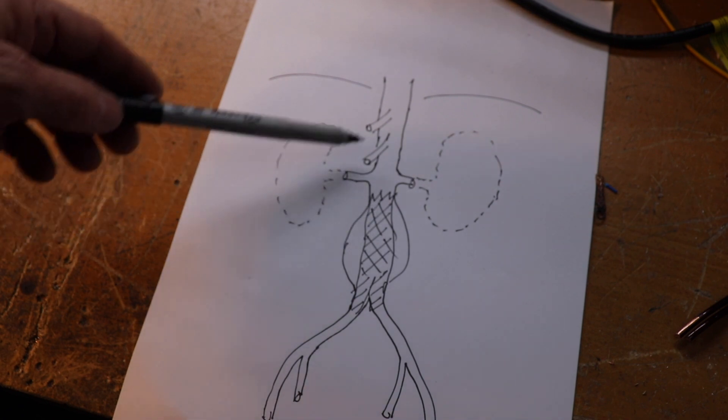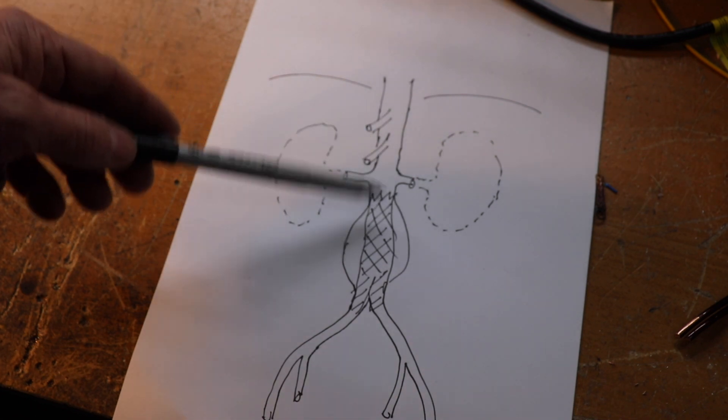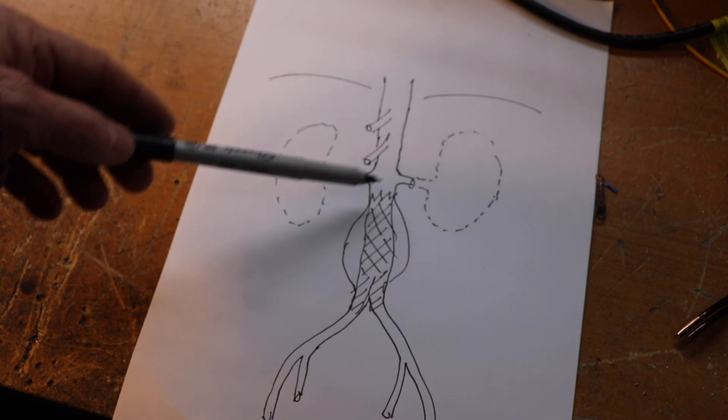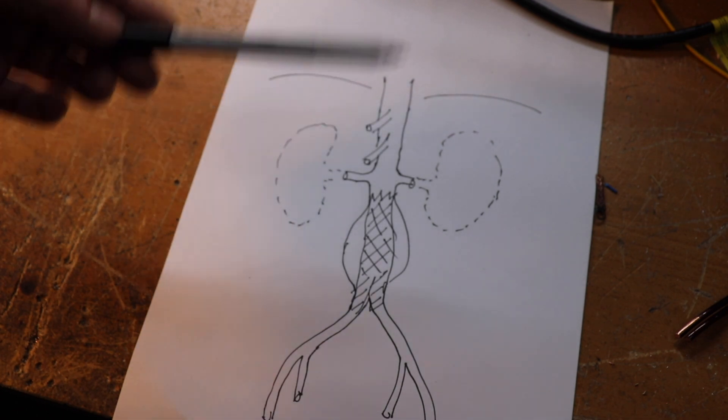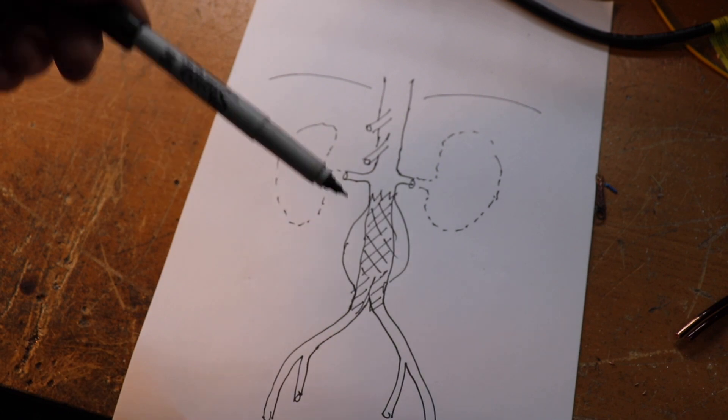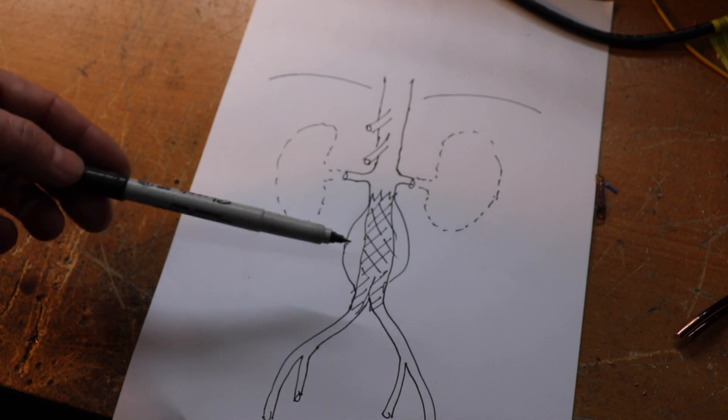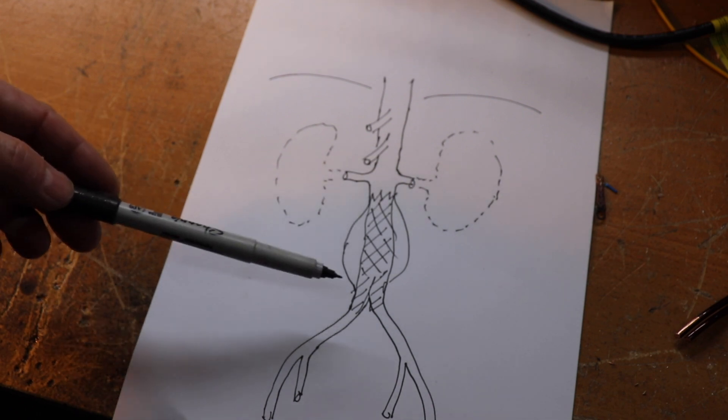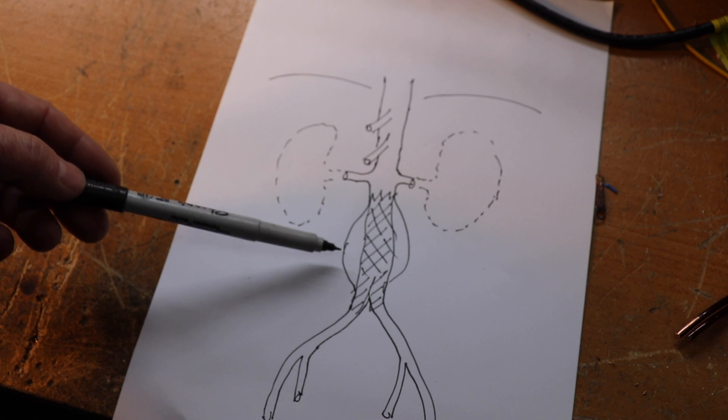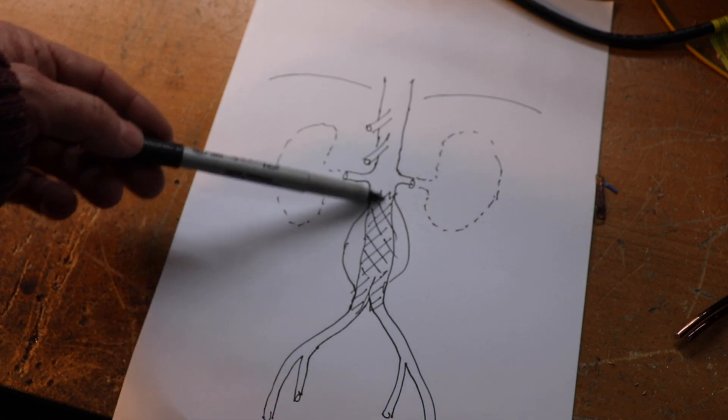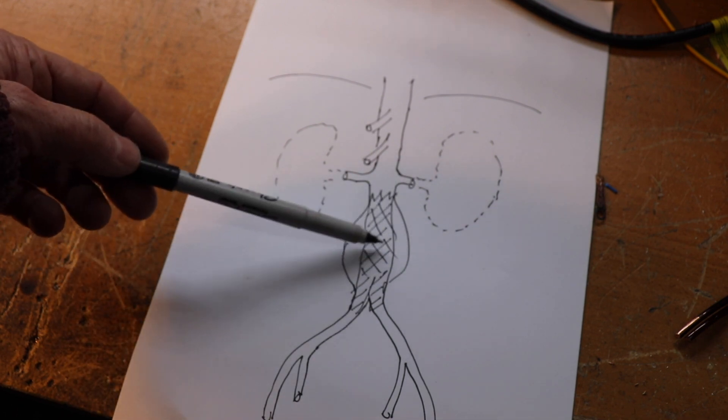Obviously if the seals fail, the aneurysm will be pressurized again. The open operation has stood the test of time, but it's a big operation. We have to clamp the aorta. There's lots of problems - it can strain the heart, there's risk of kidney failure, problems with the bowel. It certainly carries a higher morbidity and mortality. On the plus side, if you have an open operation that will usually last you for the rest of your life and you don't need the rigorous follow-up that you have with the stent graft.